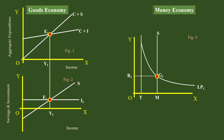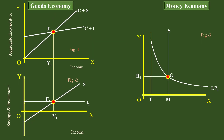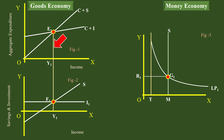Let us see first the goods economy. It assumes interest rate is given, or no change in the interest rate. Equality between aggregate demand and aggregate supply determines goods economy equilibrium. To begin with, the economy is in equilibrium at Y1 level of income, as Figure 1 shows. At Y1 level of income, savings is equal to investment, as illustrated in Figure 2.